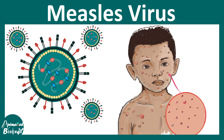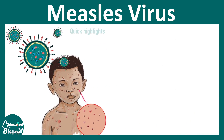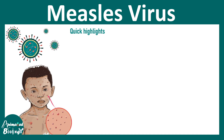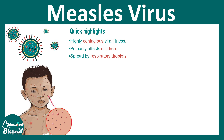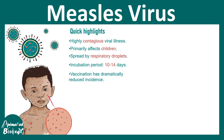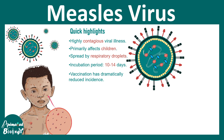In this video, we'll talk about measles virus and measles infection. Here are some quick highlights: this is a highly contagious viral infection, primarily affecting children, spread by respiratory droplets. Its incubation period is 10 to 14 days, and vaccination has dramatically reduced the incidence of measles.